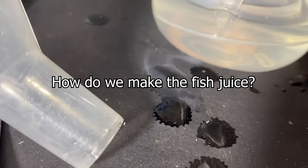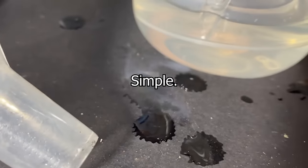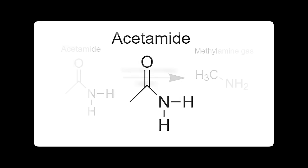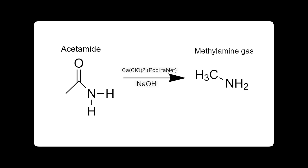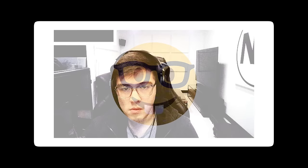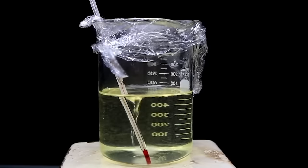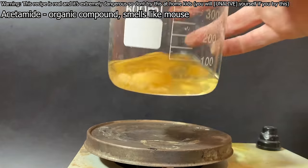So how do we make the fish juice? Simple. Here's acetamide, made in a previous video. To go from this to methylamine, all we have to do is pluck out the carbonyl group from the acetamide. To do that, I'll be using a popular reaction called Hoffman's Rearrangement - the same reaction used to make hydrazine from urea. Let's go!